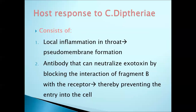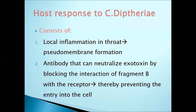The first response to Corynebacterium diphtheriae: how does pseudomembrane formation take place? Local inflammation in the throat due to irritation by the microorganism leads to pseudomembrane formation. Second, antibodies can neutralize the exotoxin by blocking the interaction of fragment B with the receptor, thereby preventing entry into the cell.